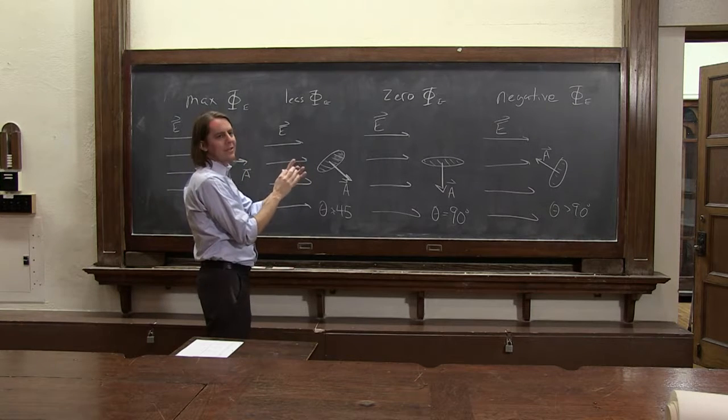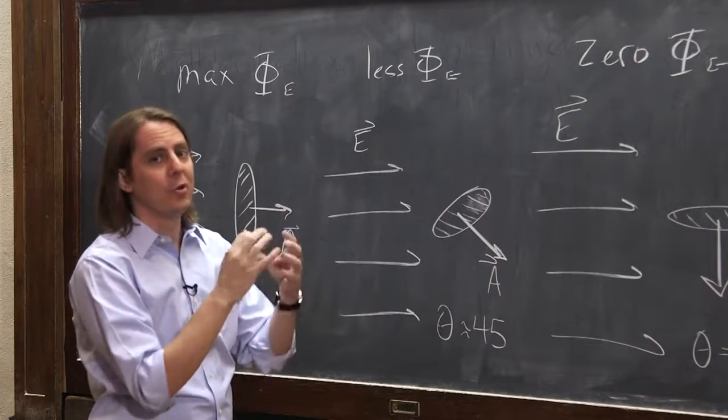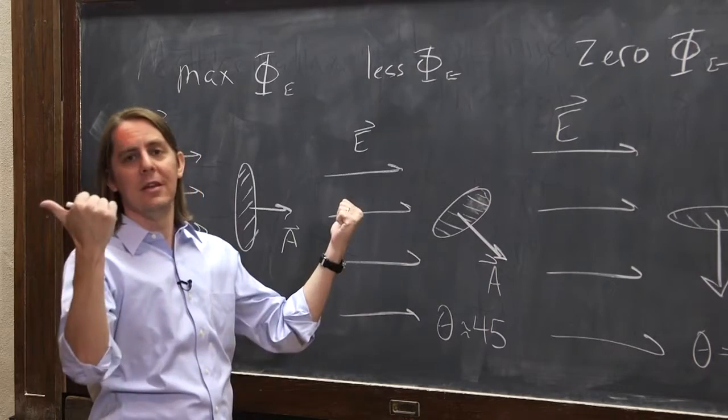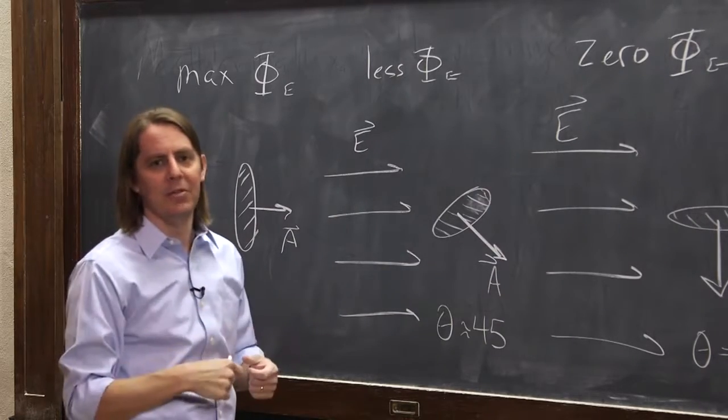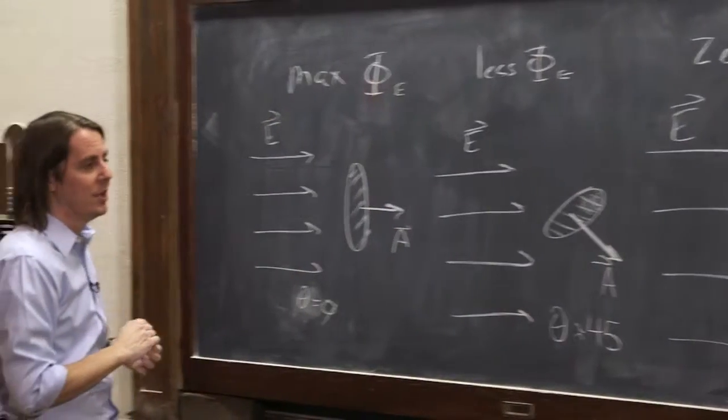For little flat disks like this, it doesn't matter which way A is. For other surfaces, closed surfaces, then it becomes not so meaningless. You can always say out has to be positive A and in has to be negative A. But for these surfaces, it could be either way. It's really just which sign you want to give the flux.